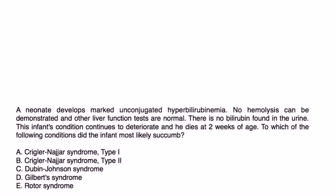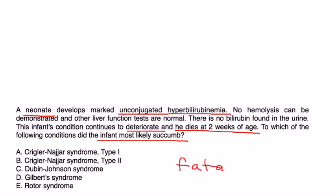First vignette: A neonate develops marked unconjugated hyperbilirubinemia. No hemolysis can be demonstrated and other liver function tests are normal. There is no bilirubin found in the urine. The infant's condition continues to deteriorate and he dies at two weeks of age. Of all the hyperbilirubinemias discussed, the only one that is fatal is Krigler-Najjar type 1, so that would be choice A.